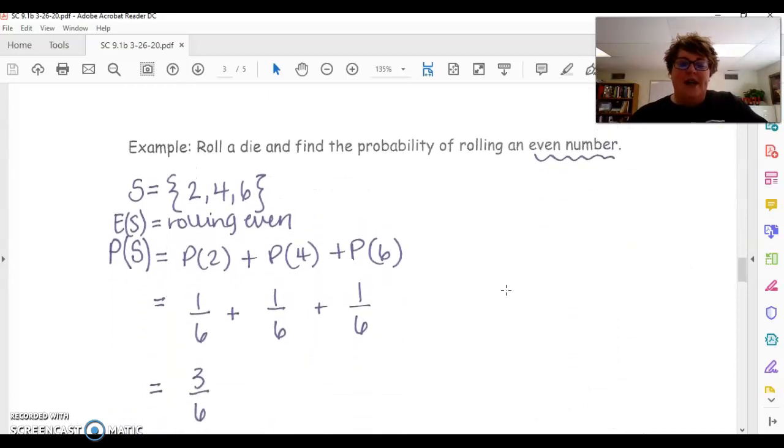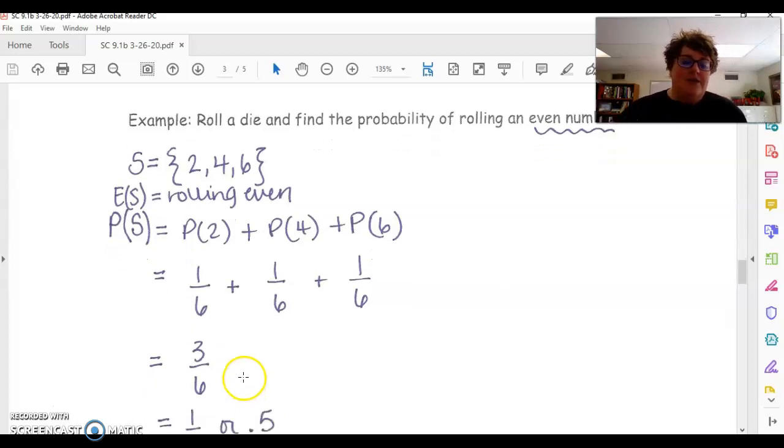So here's an example. Roll a die and find the probability of rolling an even number. So I can either roll a 2, a 4, or a 6. So my event is rolling an even number. So when I want to find the probability of that, I have to find the probability of rolling a 2 plus the probability of rolling a 4 plus the probability of rolling a 6. So each of those are 1 out of 6.